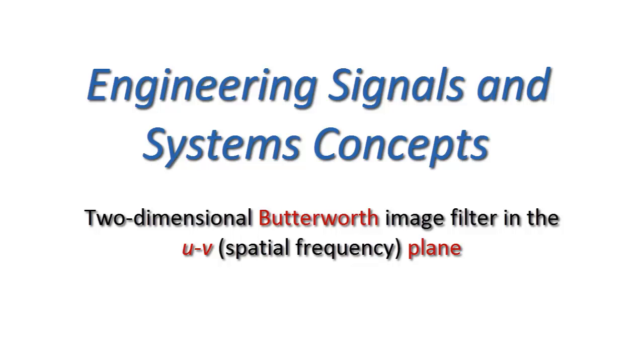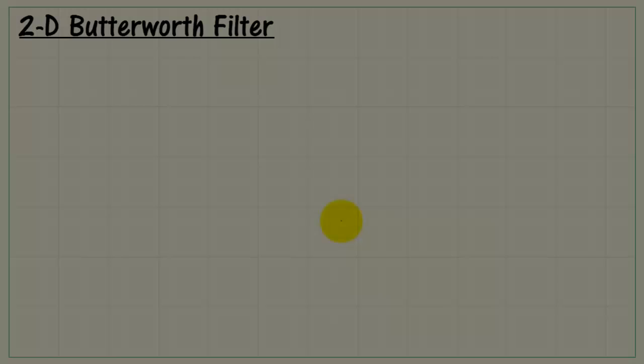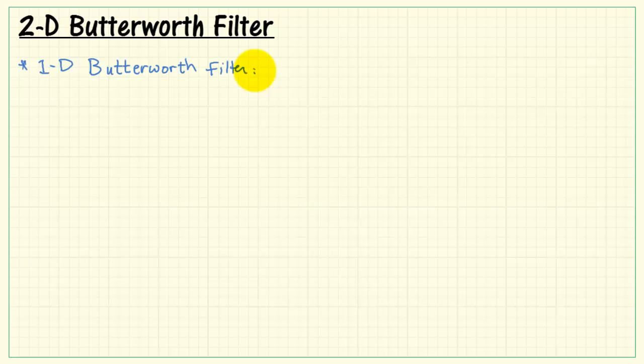You can easily create a two-dimensional Butterworth image filter in the UV plane. This is where we have our spatial frequencies. Let's see how we do this.